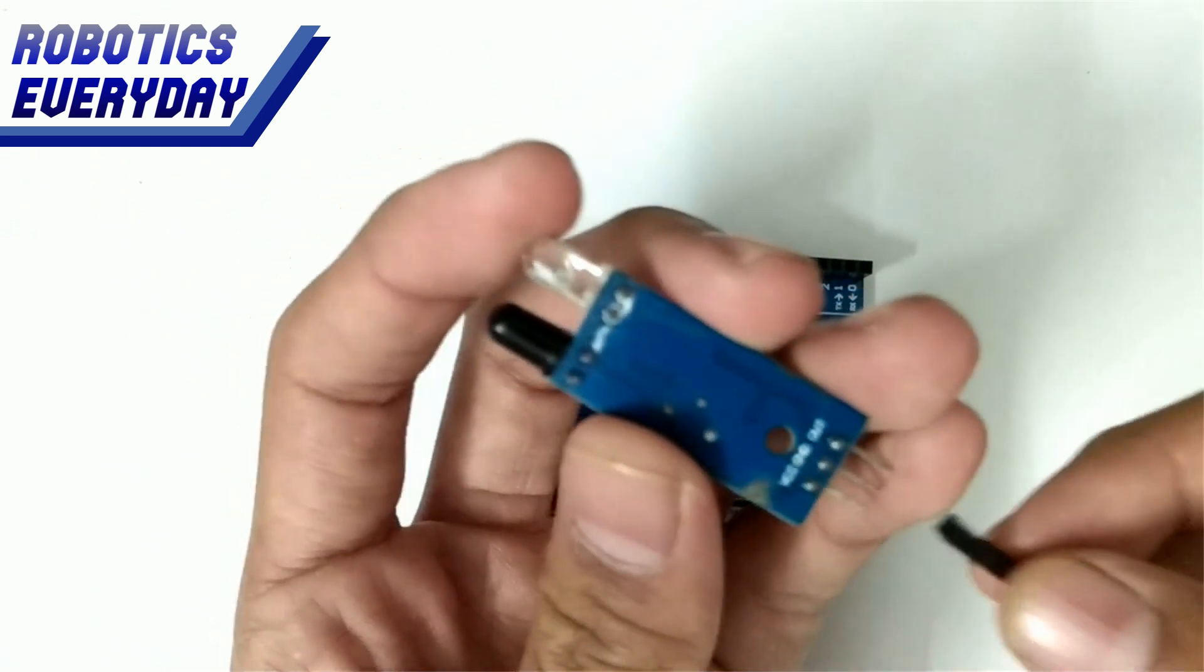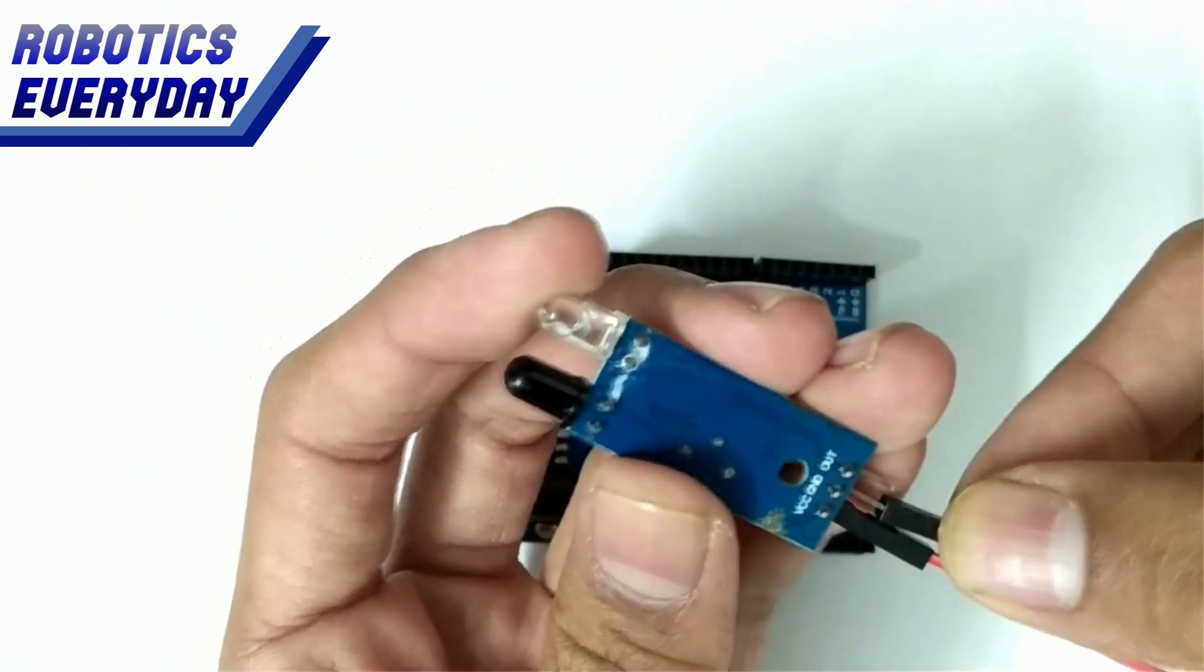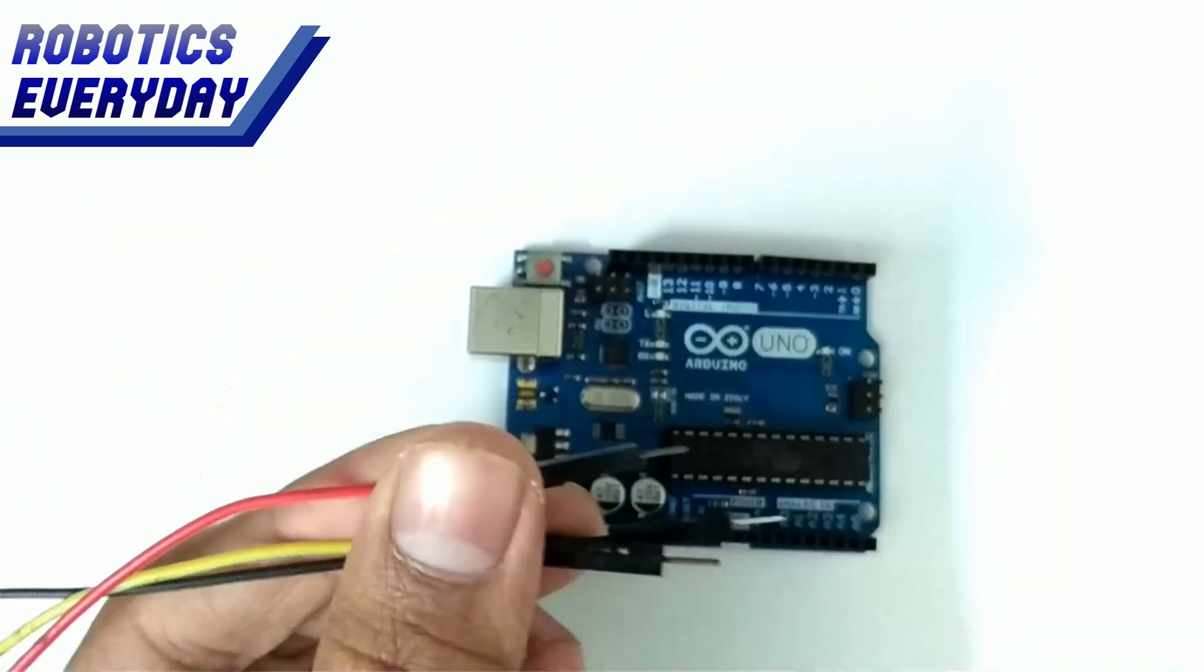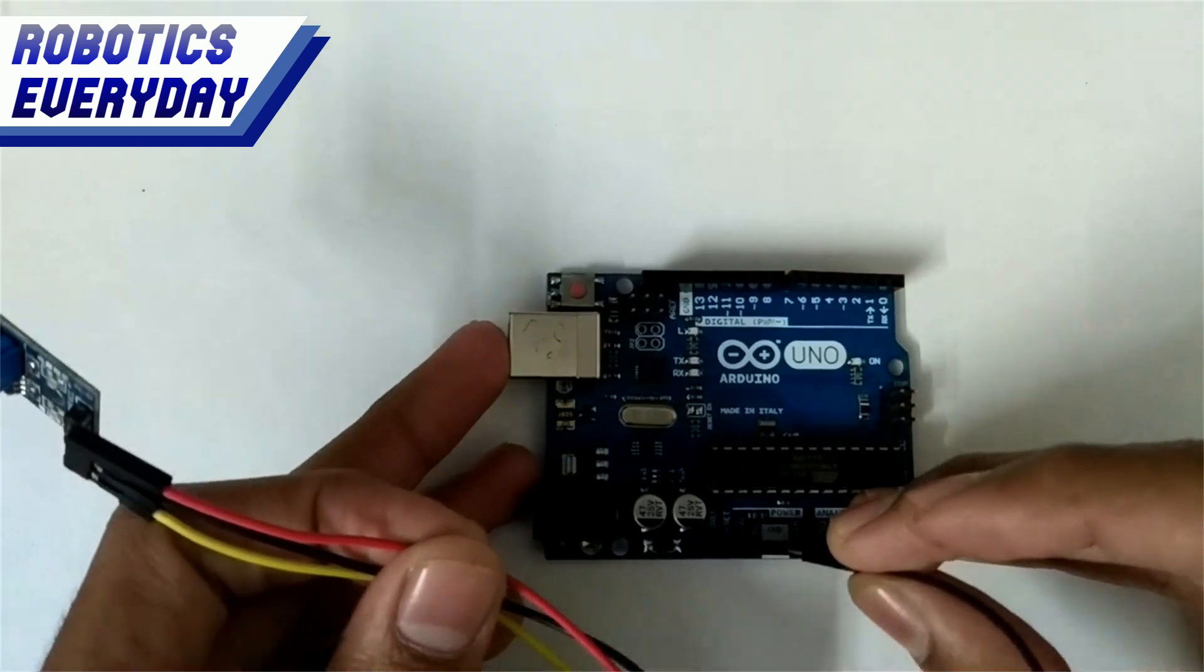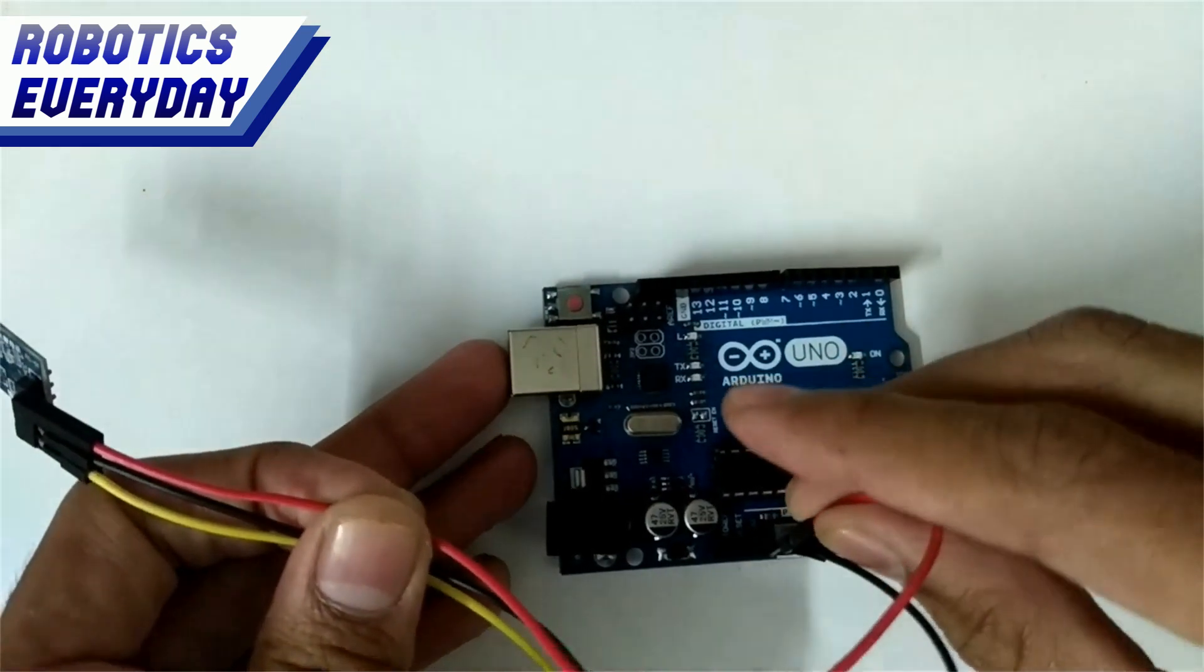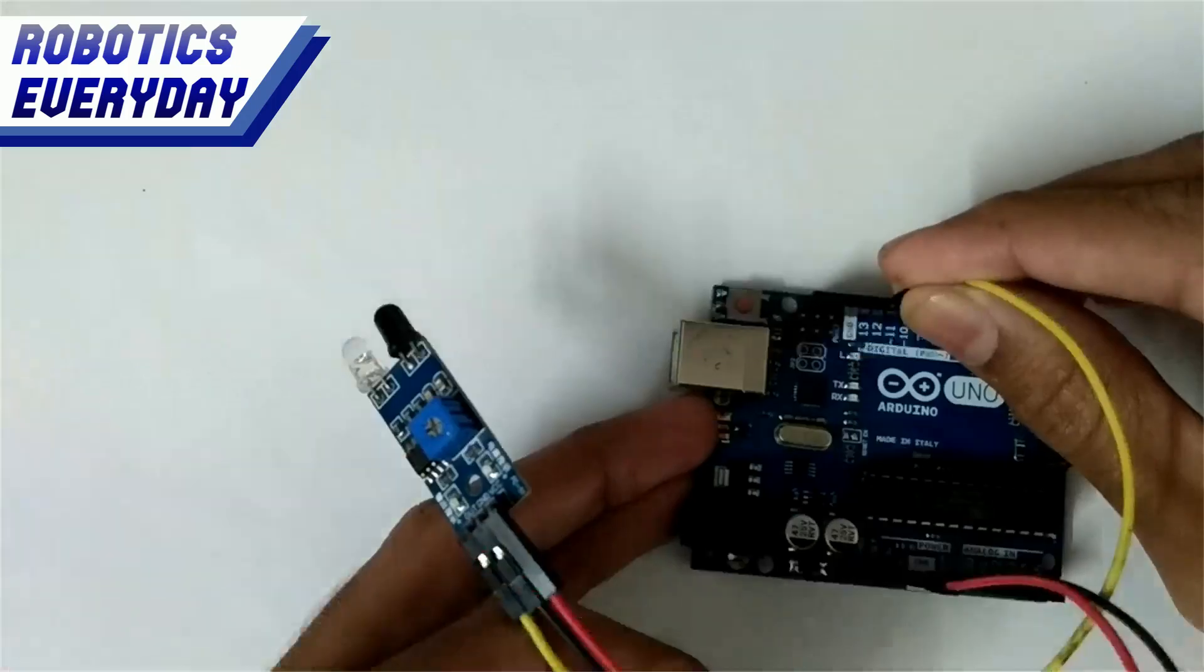We will connect jumper wires to the infrared sensor module. This sensor has three pins: VCC, ground, and output. The VCC wire will be connected to a plus 5 volts pin, and the ground pin will be connected to the ground pins of the board. The output pin will be connected to digital pin 1 of the board.